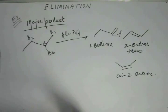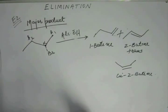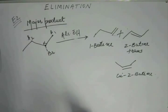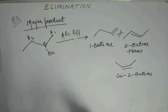From whichever position the alcoholic OH⁻ can abstract hydrogen with equal ease, the major product will be decided by the most stable product. The position from which abstracting hydrogen gives the most stable product will give us the major product. That means to see the major product, we look at the thermodynamics of the reaction. The base will abstract hydrogen from the position that gives the most stable product, so the most stable product will be the major product.